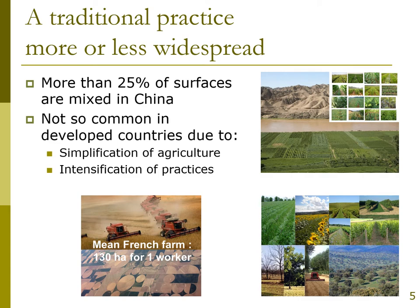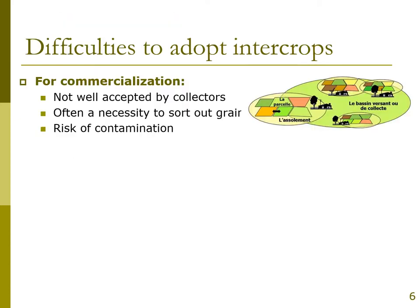A French farmer, for instance, manages on average 130 hectares. The bigger the farm, the lower the diversity, as it is more difficult to manage many crops. So farmers have become accustomed to very simplified practices with only a limited number of crop species. That is one of the reasons why intercropping is less and less cultivated in our context. It's important to try to understand why farmers are growing fewer intercrops — this is due to some lacking factors and difficulties.